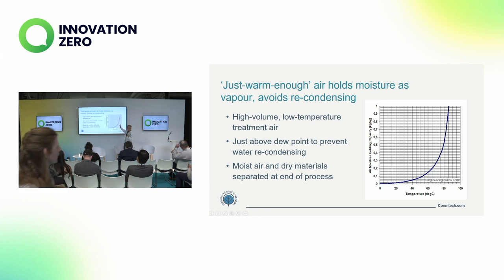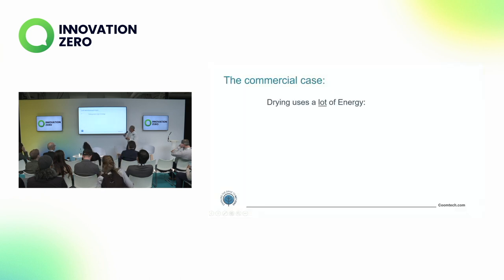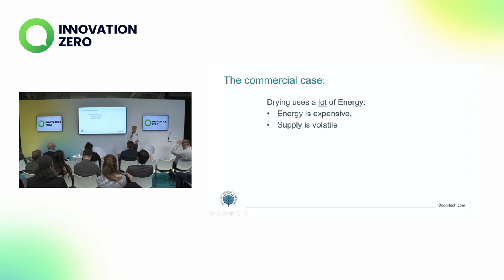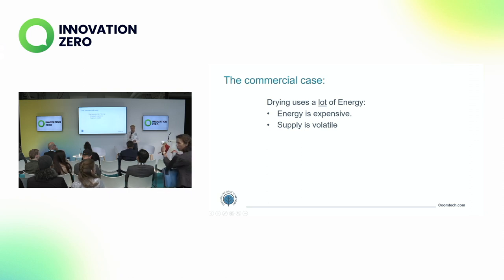We use this principle: we keep the air only warm enough to stop it recondensing. We don't have to get it up to the point where we boil everything. The commercial case is basically we save a lot of energy, and energy is expensive. More than just being expensive, we're moving into a world where energy is difficult — it's volatile, you can't always be sure you're going to be able to source it when and where you want, at a predictable price. Decoupling from high volume energy supplies is just a sleep-well-at-night thing for a business to do.